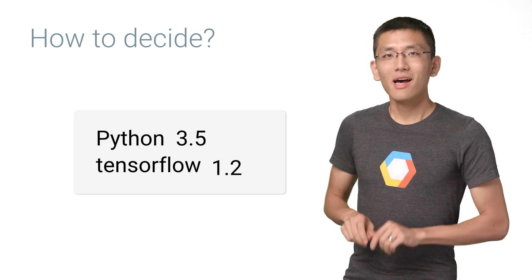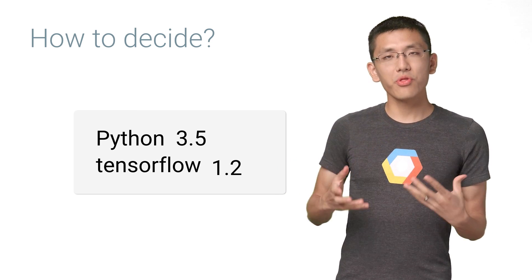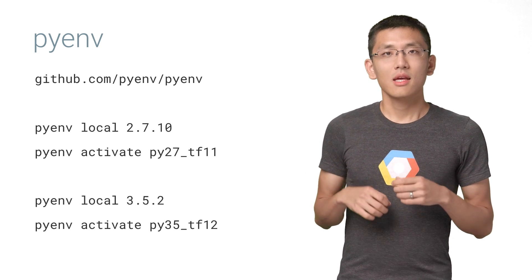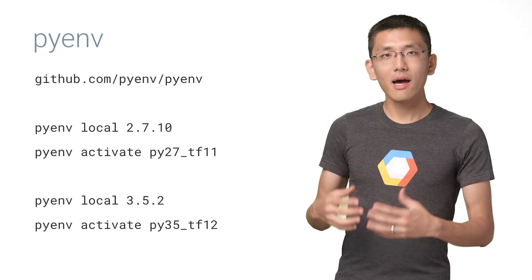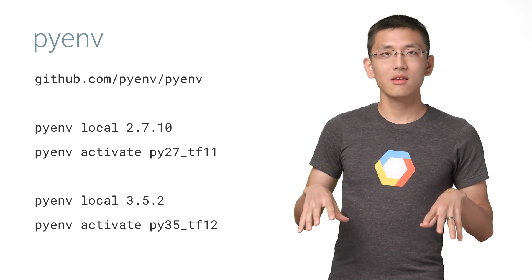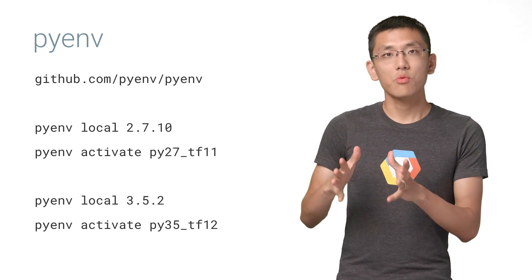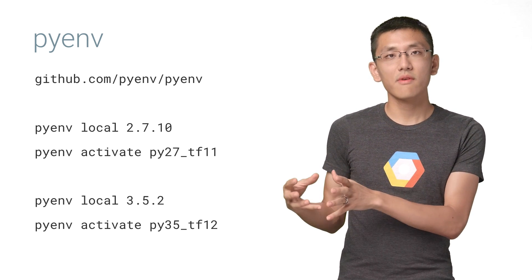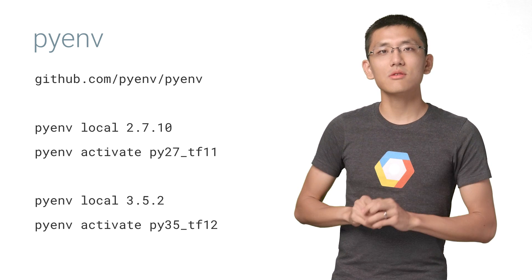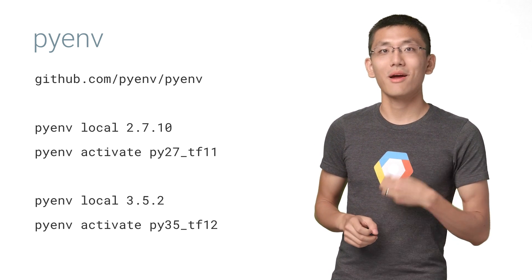So, I have opted to use both, but I manage the whole thing using a library called Pyenv. Conceptually, Pyenv sits atop both Virtualenv and Anaconda, and it can be used to control not only which Virtualenv environment or Anaconda environment is in use, but it also easily controls whether I'm running Python 2 or Python 3.